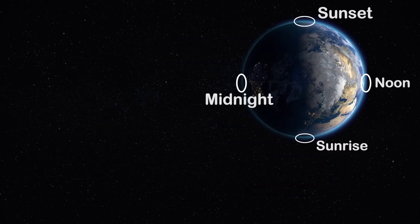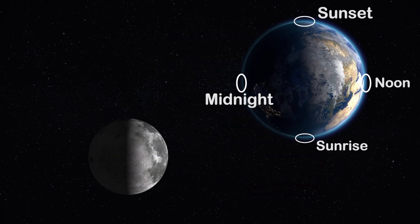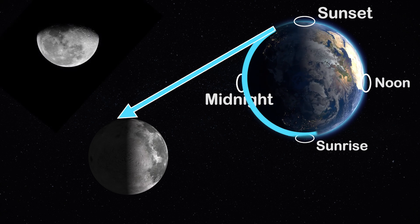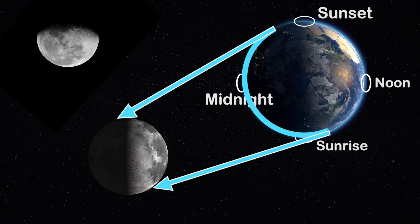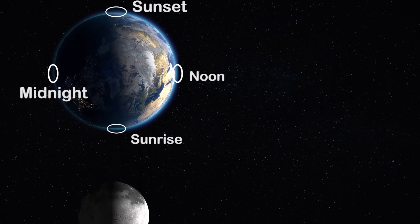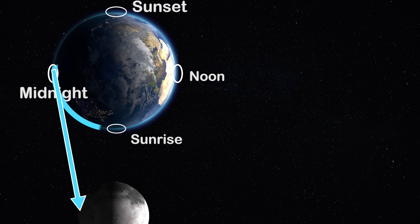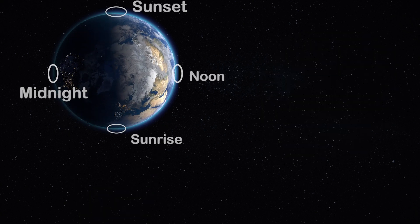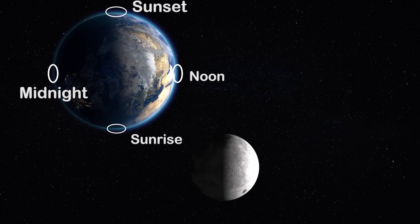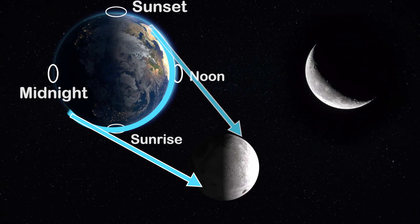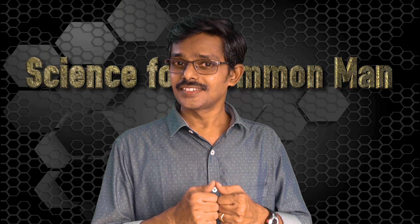Waning gibbous starts appearing after sunset and continues to be visible a little while after sunrise. The third quarter, as we can see, starts appearing at midnight and continues up to noon. In the case of waning crescent, it starts appearing after midnight and continues till afternoon.